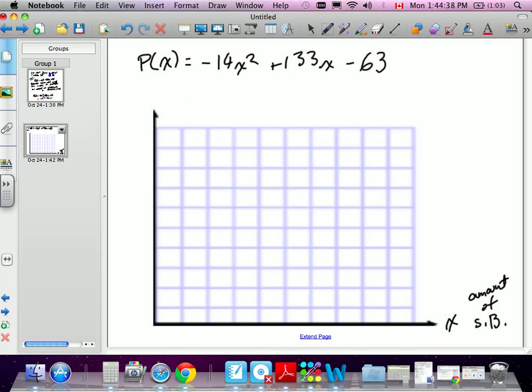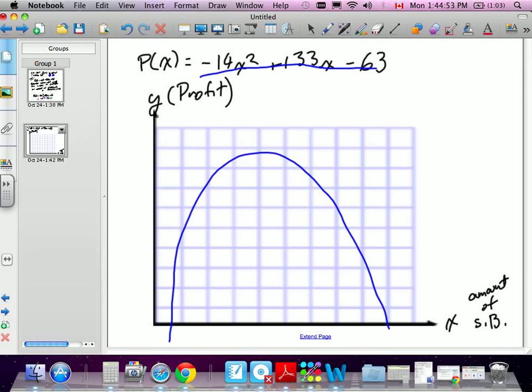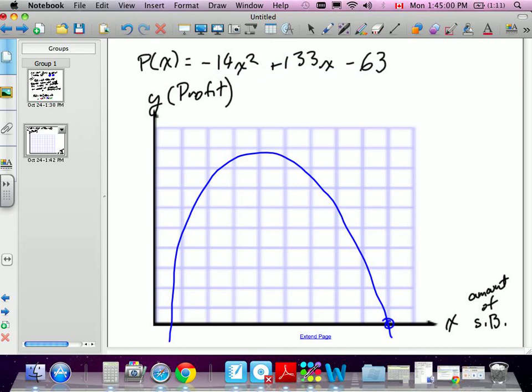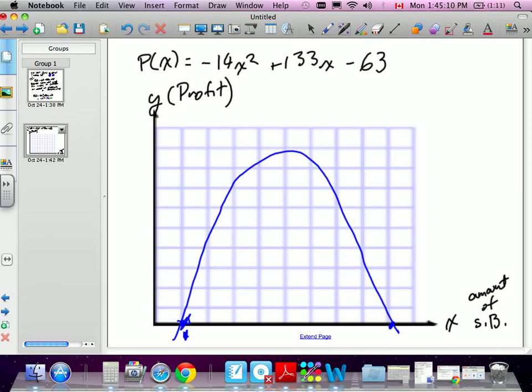Now they want to know when this company is profitable. What that means is they're going to have some parabola, because this is a quadratic equation. The parabola is going to have two x-intercepts because it's facing downwards. And what that means is at some point, whatever the x-intercept is, whatever that amount is, is when the company starts becoming profitable. And then eventually after they've sold too many, they're no longer profitable. So what we're actually looking for are the two x-intercepts, which means we're going to have to factor this equation.